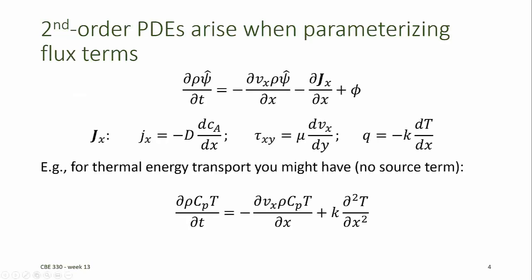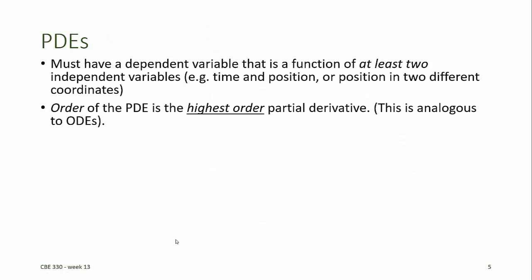An example of a PDE that has a dependent variable T that depends on two independent variables, in this case t and x, is shown here. The order of a PDE is the highest order of any partial derivative that appears in the equation. This definition is analogous to the order of ODEs that you're already familiar with.